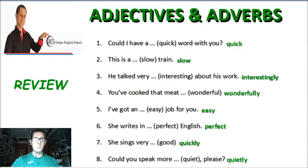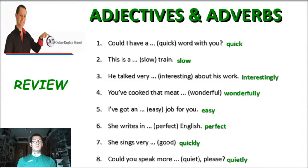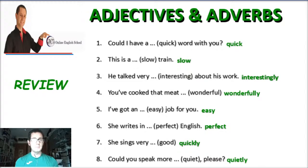Now let's talk about adjectives and adverbs — we covered this in one of the previous lessons, I think it was the first lesson. Example sentences: "Could I have a quick word with you?" — "quick" is an adjective. "This is a slow train." "He talked very interestingly about his work." "You've cooked that meat wonderfully." "I've got an easy job for you." "She writes in perfect English." "She sings very quickly." "Could you speak more quietly, please? I'm trying to sleep."